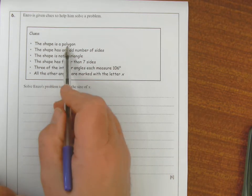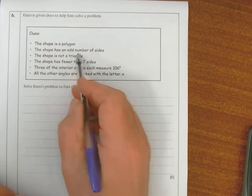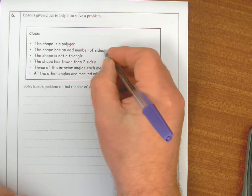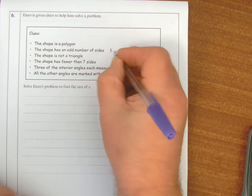Okay, so we've got a polygon. The shape has an odd number of sides. I can't have a one-sided shape, so it must have an odd number of sides.